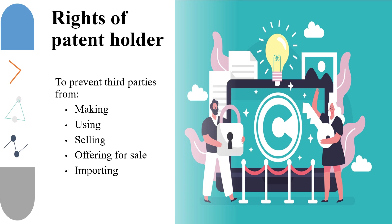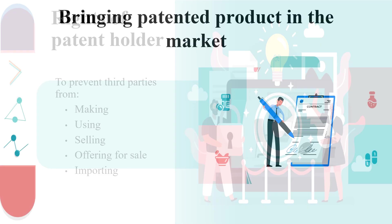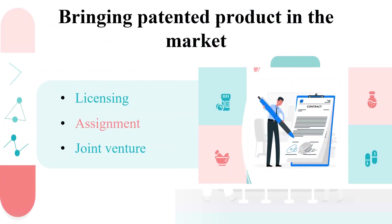This means that if any third party has to use the patented invention, permission from the patent holder is required, and this permission or consent of a patent holder is called a license. Once a patent is granted, in order to generate revenue out of it, it has to be commercialized. For a patent holder, there are a couple of options by using which he can make money from his patent.